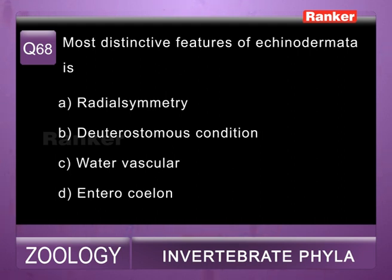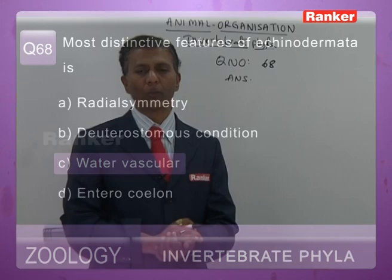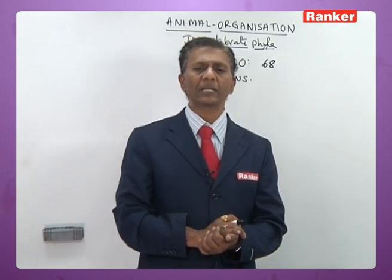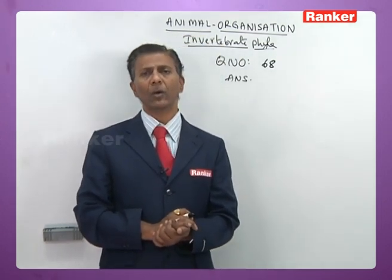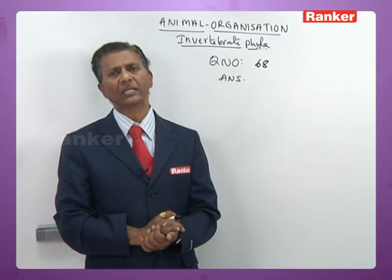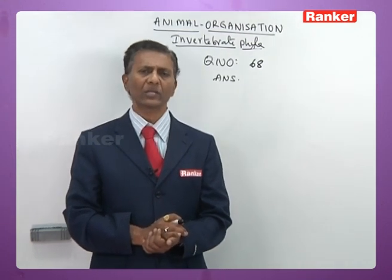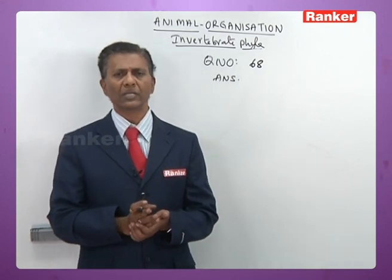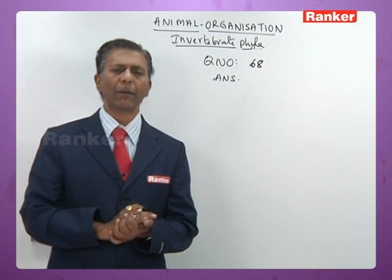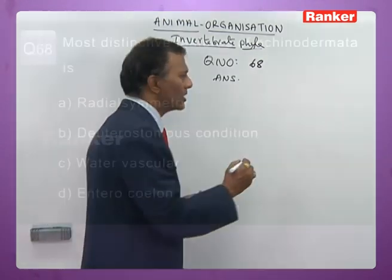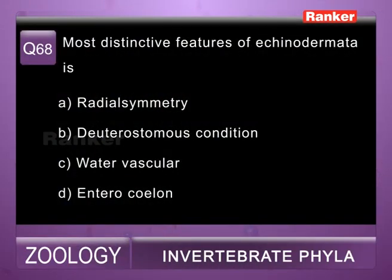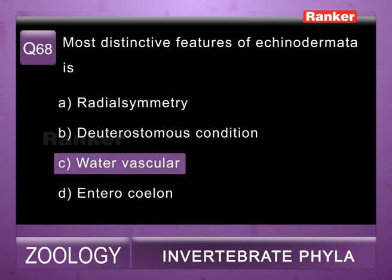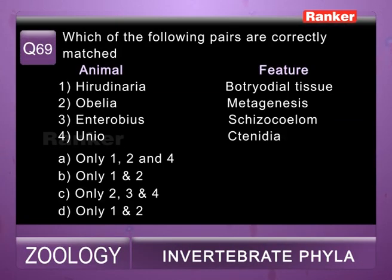Question sixty-eight: most distinctive feature of Echinodermata — a) radial symmetry, b) deuterostomian condition, c) water vascular system, d) enterocoelous. The most distinctive/unique feature of echinoderms is the water vascular system (also called ambulacral system). Deuterostomian and enterocoelous conditions are shared with chordates. So sixty-eighth question correct answer is c.